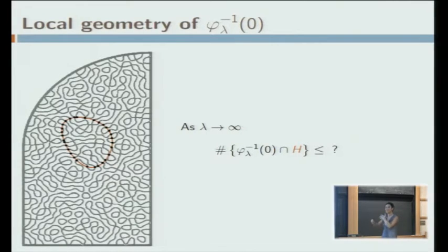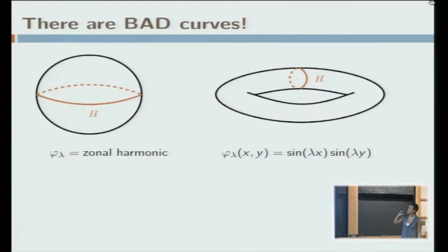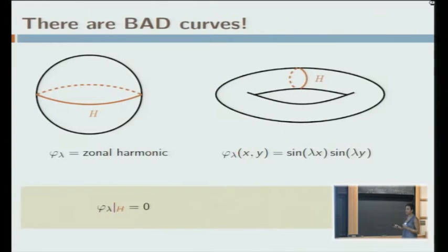You cannot ask this question for any such h. It's not a well-posed question, actually. There are examples on the sphere and on the torus of curves and infinite sequences of eigenfunctions that vanish completely along that curve. Which means that for those sequences, for that choice of h, this number of intersections is going to be infinite, so you cannot hope to get an upper bound. So you need to get rid of these bad curves if you want to ask how this intersection is going to behave in general.